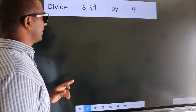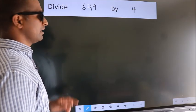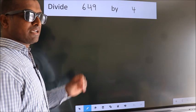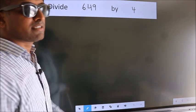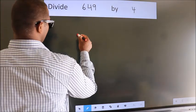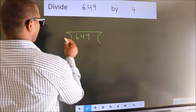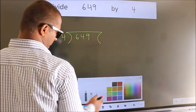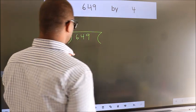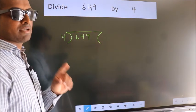Divide 649 by 4. To do this division, we should frame it in this way: 649 here, 4 here. This is step 1.